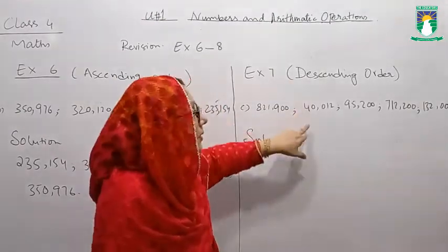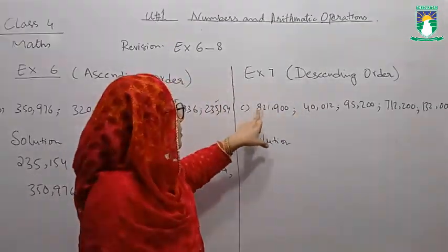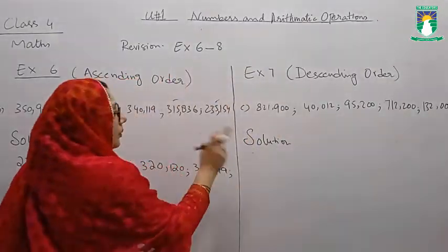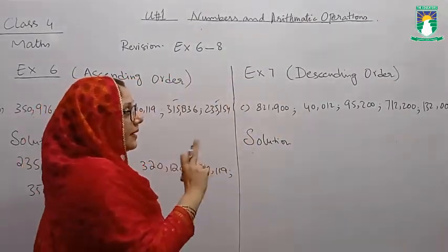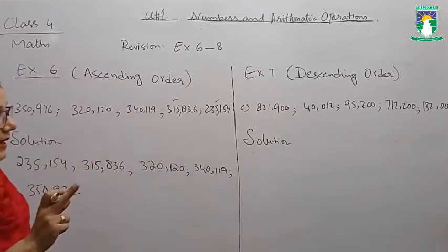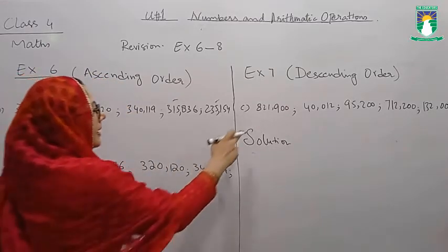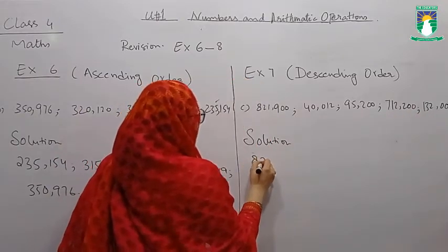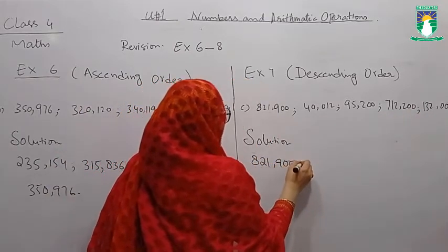First we compare the houses. All numbers have 22 houses. Now we compare the houses, their biggest house, their second house. Then which house is biggest? 821,40, 95, 712, and 132. We come to know 821,900 is the biggest house.